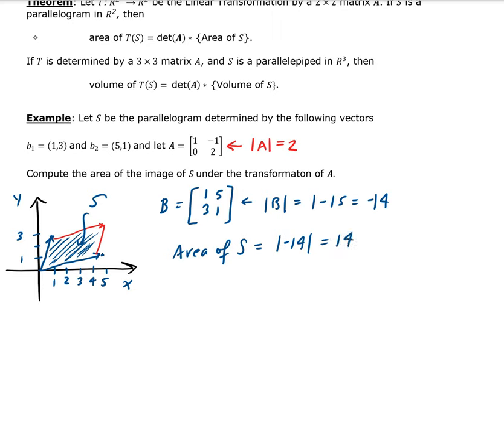Now we can use our theorem. The area of T(S) is equal to the determinant of the transformation matrix times the area of S.